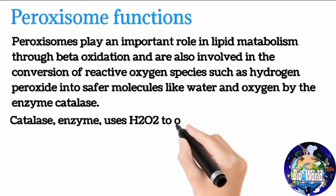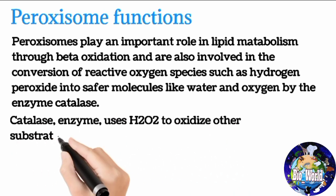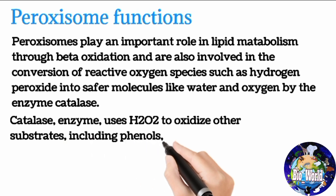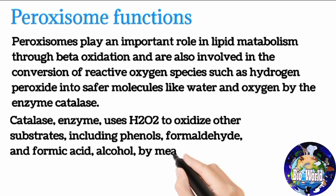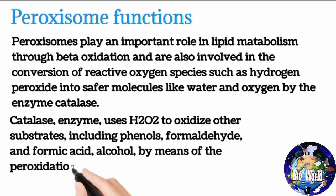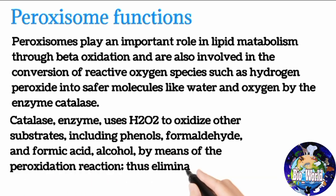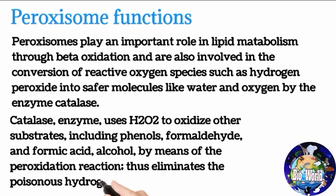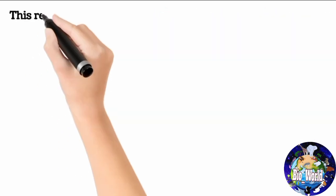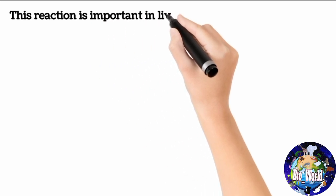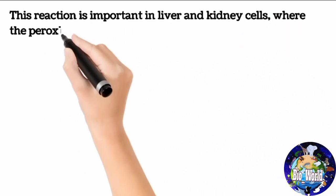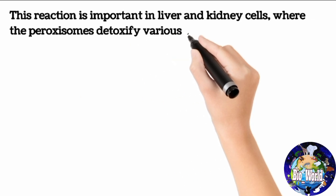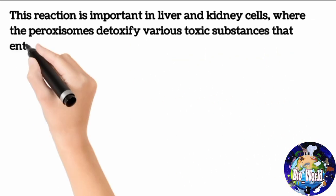The catalase enzyme uses H₂O₂ to oxidize other substrates including phenols, formaldehyde, and formic acid and alcohol, by means of the peroxidation reaction, thus eliminating the poisonous hydrogen peroxide. This reaction is important in liver and kidney cells where the peroxisomes detoxify various toxic substances that enter the blood.